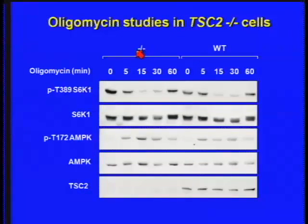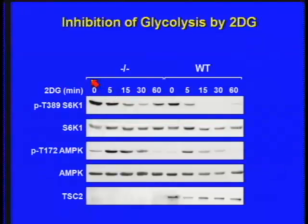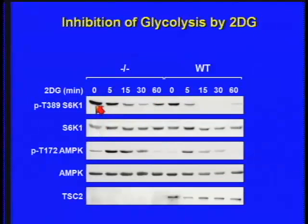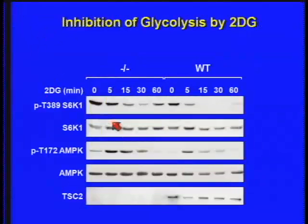We then went to human cells and looked at the effect of oligomycin in TSC-deficient and wild-type cells. In both the wild-type and TSC-deficient settings, the pathway is inactivated with very similar kinetics. If we then look at 2-deoxyglucose — now inhibiting glycolysis — we see something very similar: a very acute response in this signaling event, and the pathway begins to be rescued at later times.